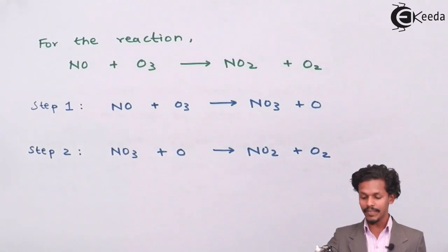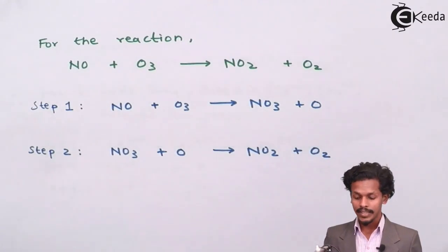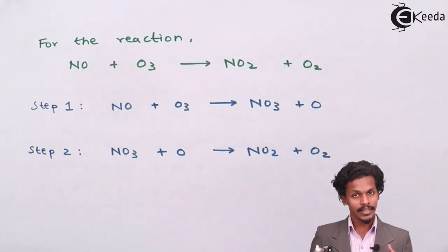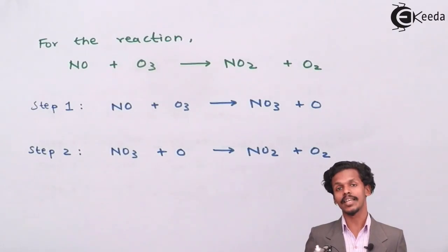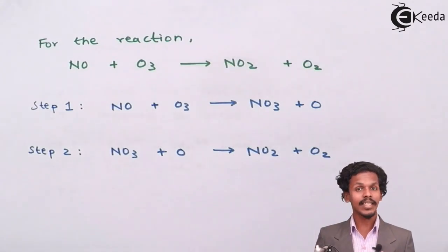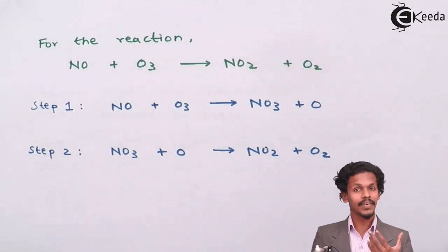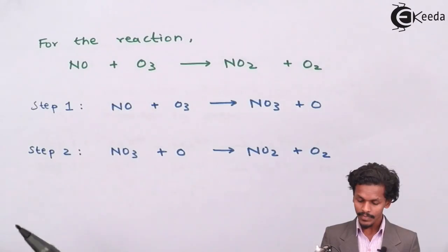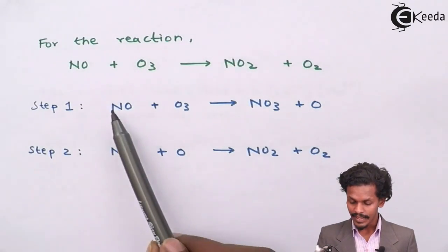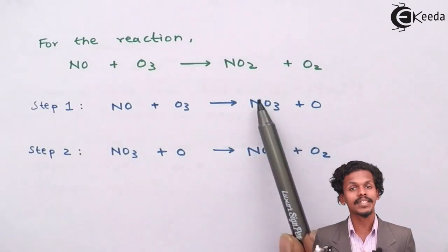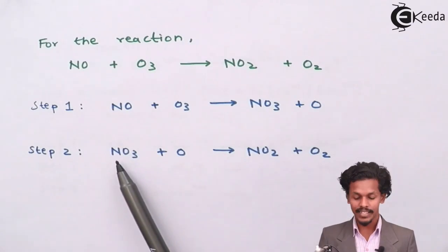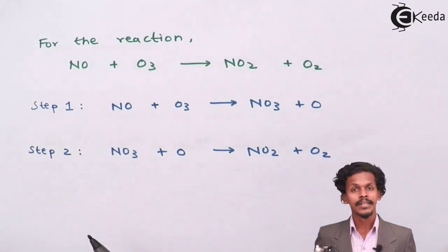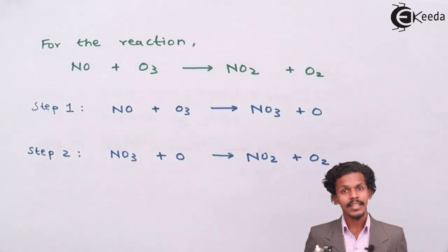This is a complex reaction giving two elementary reactions, where the product of one step acts as a reactant in the next step — that product is called a reaction intermediate. Here, NO3 formed in step one is used as a reactant in step two, and ultimately consumed to give NO2 plus O2.